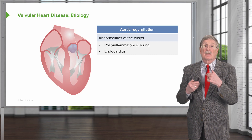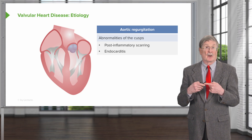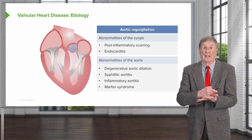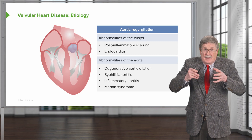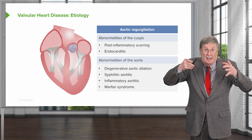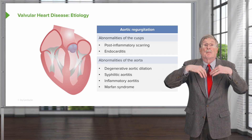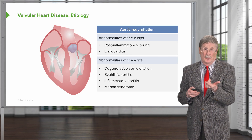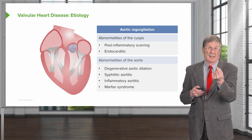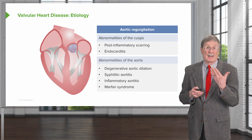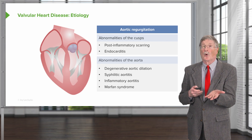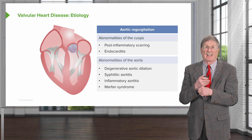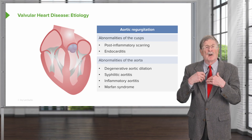Aortic regurgitation is due to abnormalities primarily of the cusps — that can be post-inflammatory scarring or endocarditis — but it can also be due to things that affect the aortic root and the aortic annulus. Degenerative aortic dilation will cause expansion and widening of the aortic annulus, causing the valve leaflets to not be able to close appropriately. You can have syphilitic aortitis, which will cause inflammatory destruction of the ascending aorta, as that's where most tertiary syphilis involving the aorta occurs. Various inflammatory aortitis lesions such as giant cell aortitis or IgG4-associated aortitis, and connective tissue disorders such as Marfan syndrome, will also dilate the aortic root and cause valvular insufficiency.